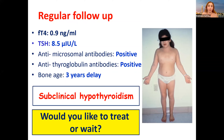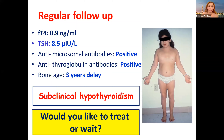Definitely we would treat, because Turner syndrome is a risk factor by itself. The TSH has jumped, antibodies are positive, and bone age is more delayed than before. There are many risk factors in this girl, so we definitely have to start treatment for this Turner syndrome case.